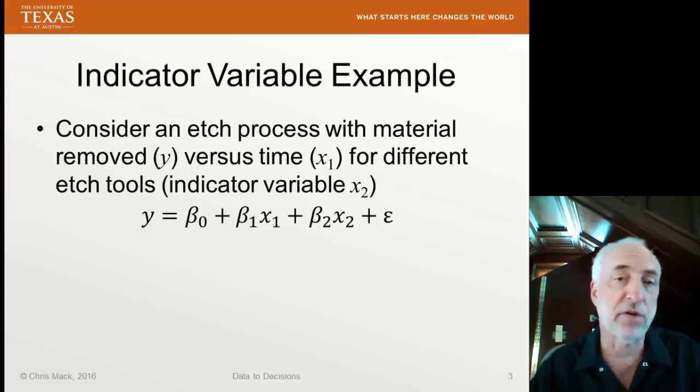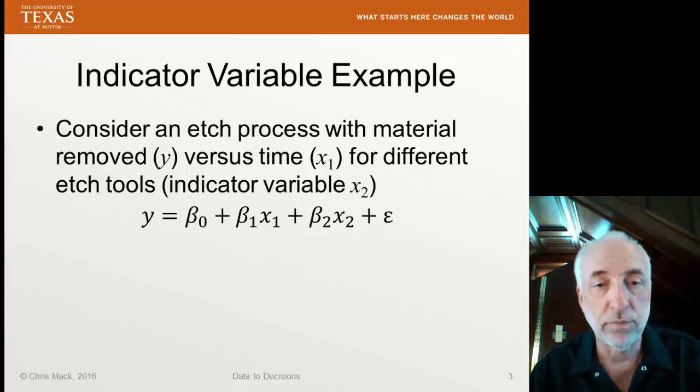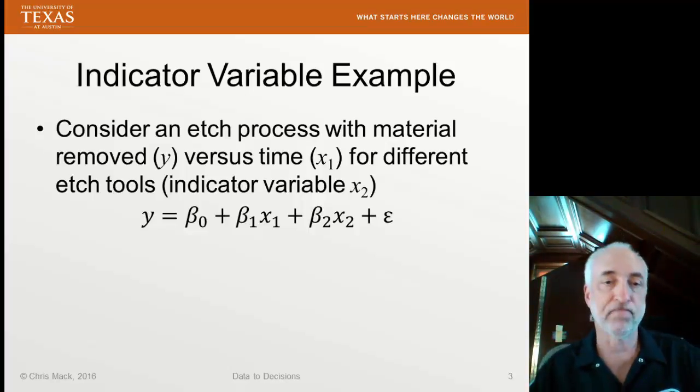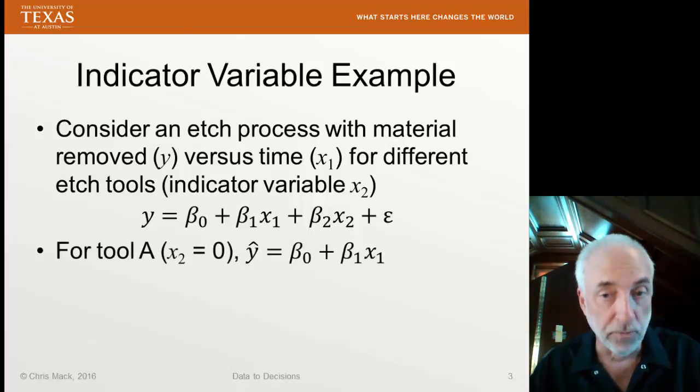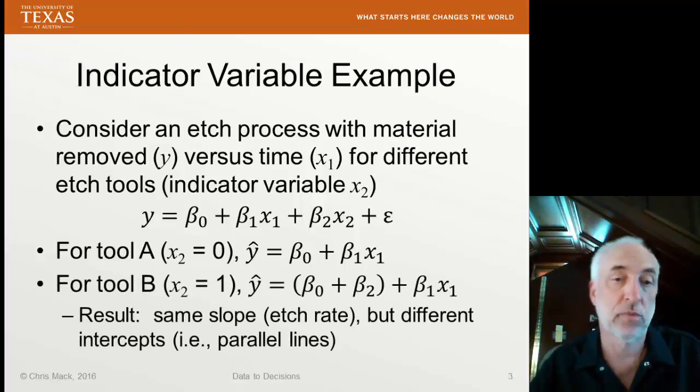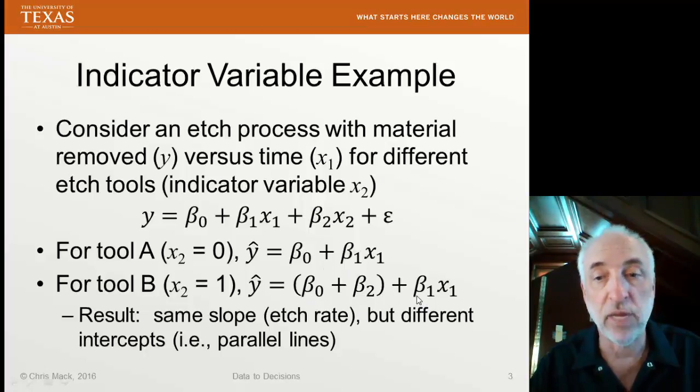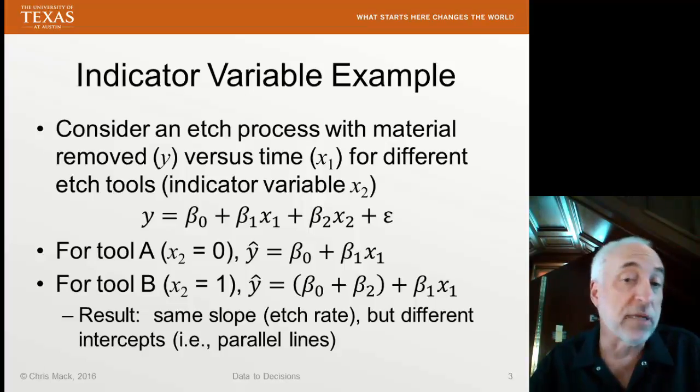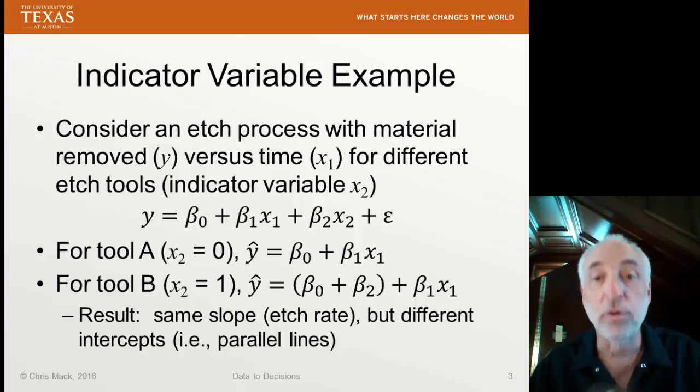Here's my model. The amount of material removed is β0 plus β1X1 plus β2X2 plus a random 0 mean variable. For tool A, we'll say X2 is 0, in which case our model is β0 plus β1X1. For tool B, X2 is 1, so our model is β0 plus β2 as our intercept, and β1 times X1. The result is both of these cases, tool A and tool B, have the same slope, which will be our etch rate, but they have different intercepts. The model assumes I have two parallel lines.